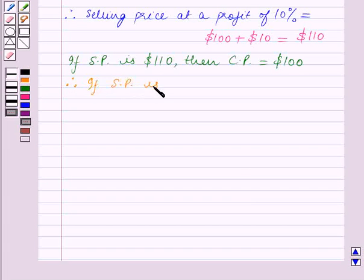So if selling price is $2,200 then cost price is equal to $100 upon $110 into $2,200.